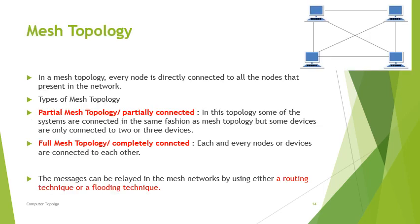In mesh topology, each node is connected to every other node in the network, either partially or completely. In a completely connected mesh, every device is connected to each other. In a partially connected mesh, only some devices are interconnected. Messages can be transmitted from one node to another using routing techniques or flooding techniques.